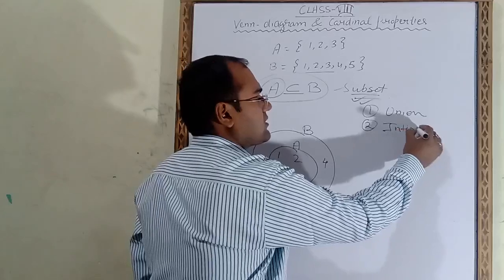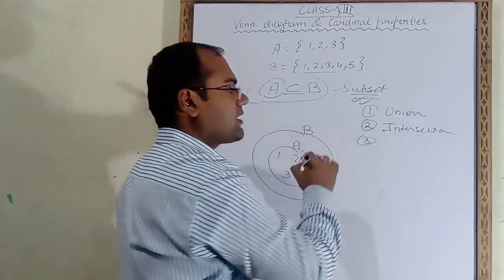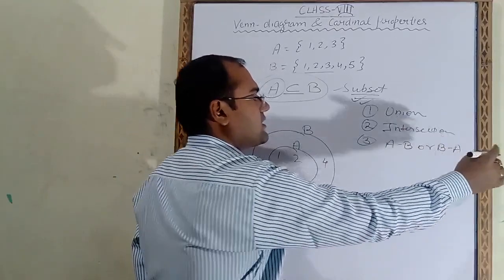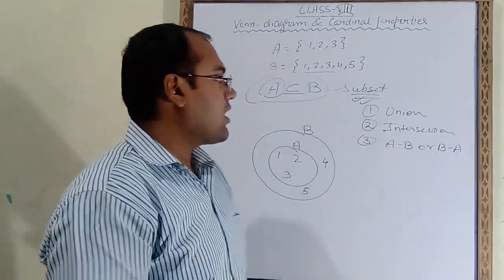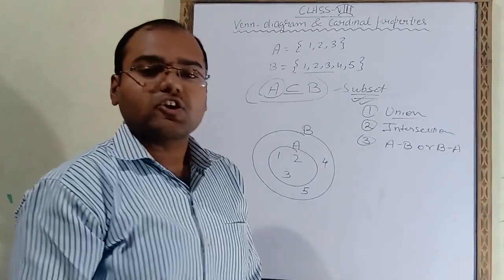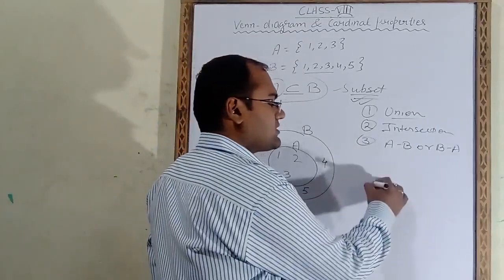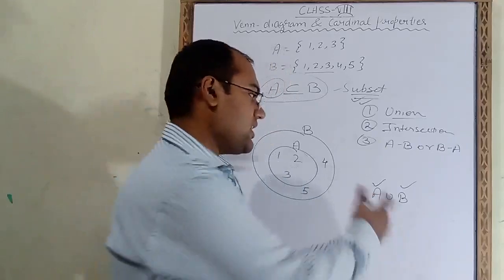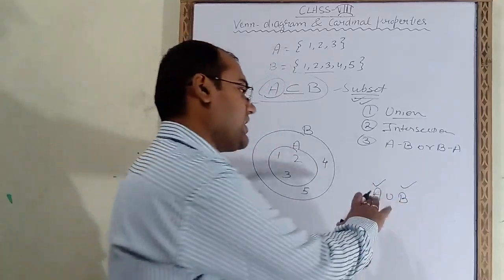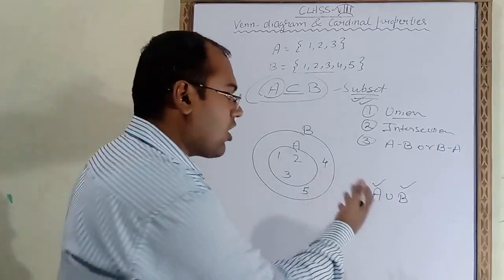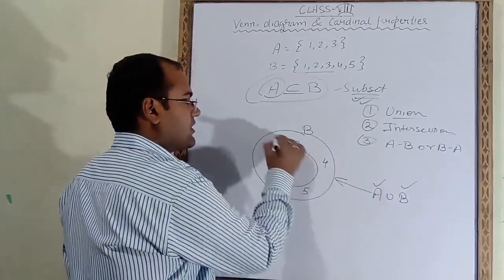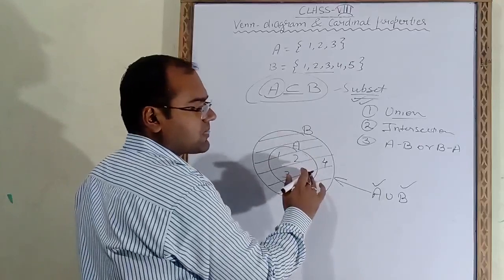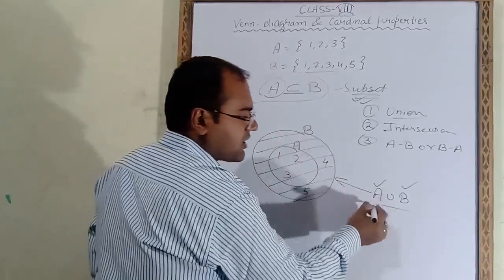In this subset diagram, three things are shown: first, how to represent union; second, how to represent intersection; and third, how to represent A minus B or B minus A. For union, A union B means A elements also and B elements also — either A, or B, or both. We represent union by shading the whole field of both circles. This is the Venn diagram for A union B in the subset case.